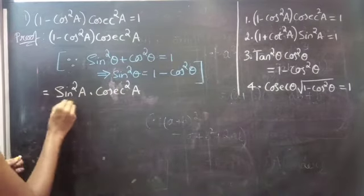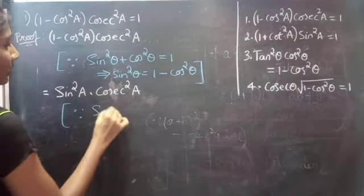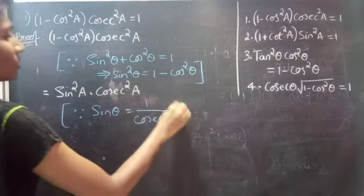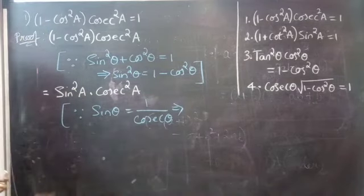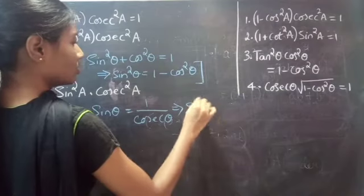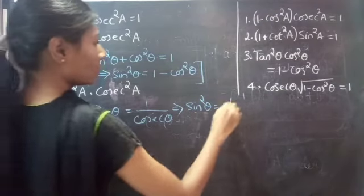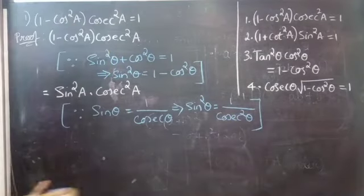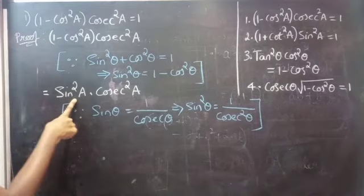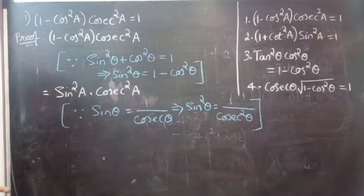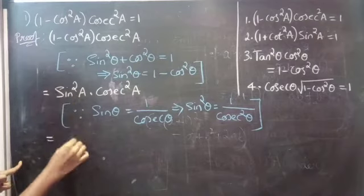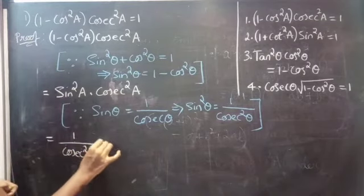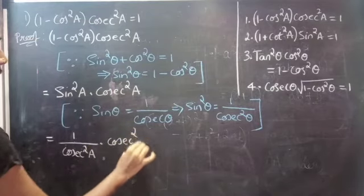Since the reciprocal of sin θ is 1/csc θ, if you square both sides you get sin²θ = 1/csc²θ. So we replace sin²A with 1/csc²A, giving us (1/csc²A) · csc²A.